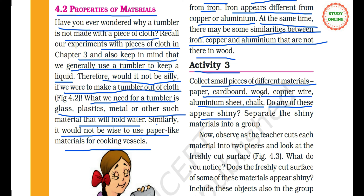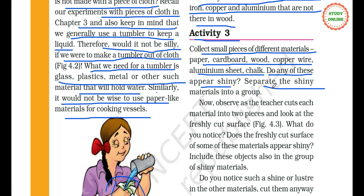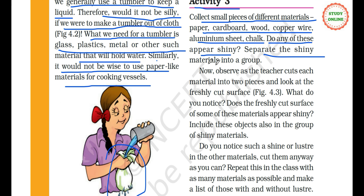Cardboard? No. Wood? No. Copper wire — yes, it will shine a lot. Aluminium sheet — it will also shine. Chalk will not shine. Separate the shiny materials into a group. Classification — we need to classify materials based on their appearance.